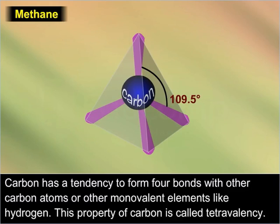Carbon has a valency of 4. This means carbon has a tendency to form 4 bonds with other carbon atoms or other monovalent elements like hydrogen. This property of carbon is called tetravalency.